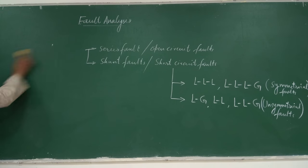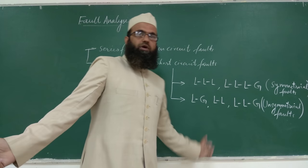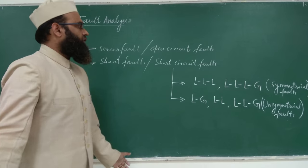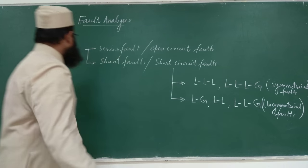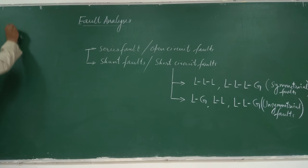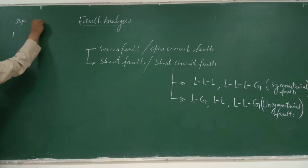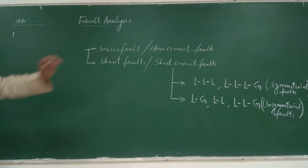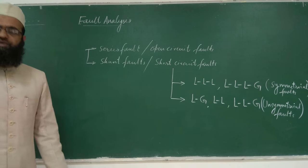Now, how to solve such problems? The steps involved in three-phase symmetrical fault calculations are as follows. Step one: draw the single line diagram of the system, where each element — generators, transformers, transmission lines, etc. — will be represented.